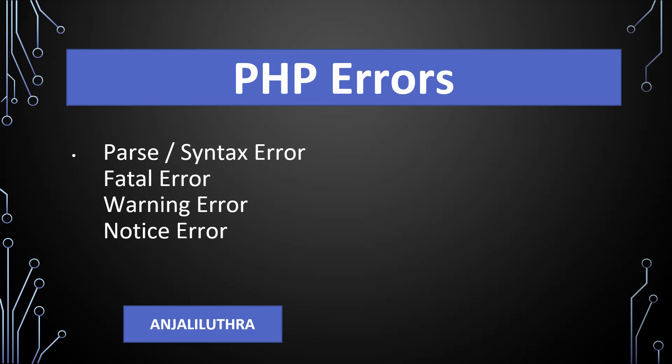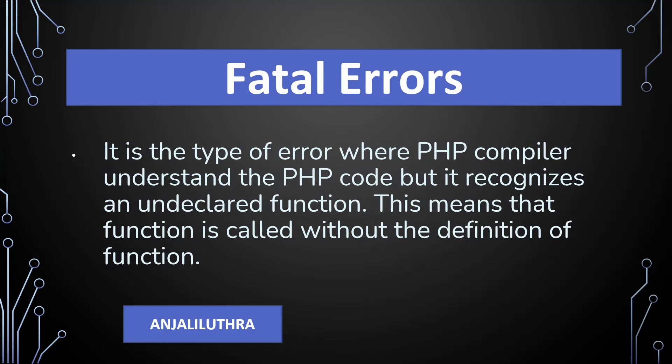The third error is the runtime error, which can affect the execution of the program. Execution starts but it may stop, or some part will execute and some part will not. So errors can come during execution. In PHP, there are three types of runtime errors: fatal errors, warning errors, and notice errors.